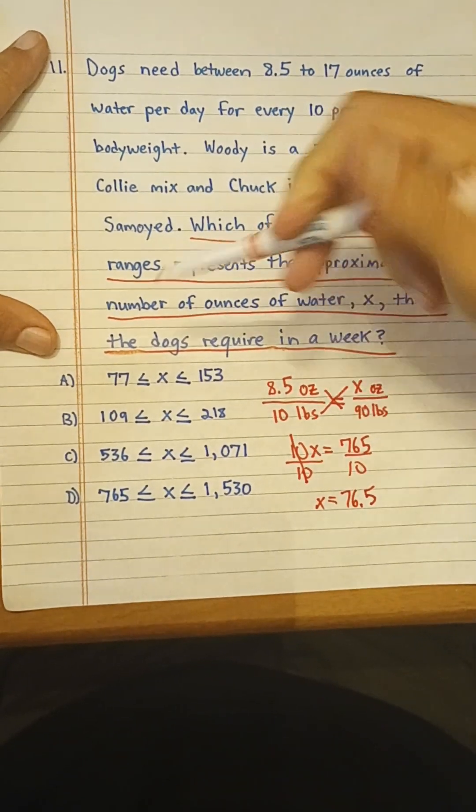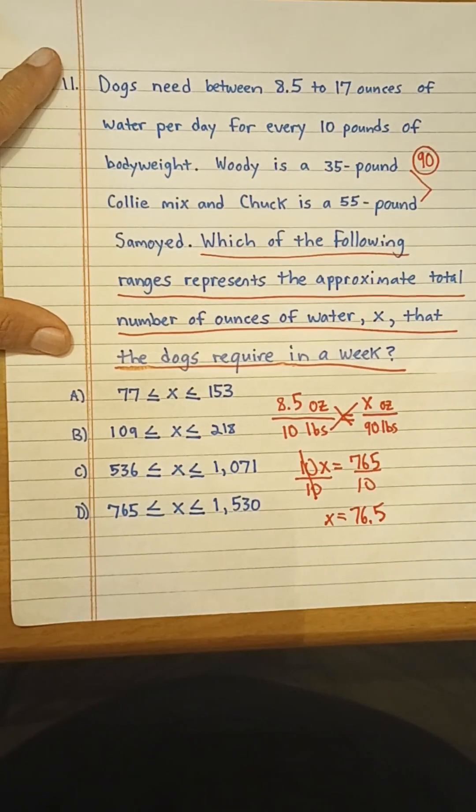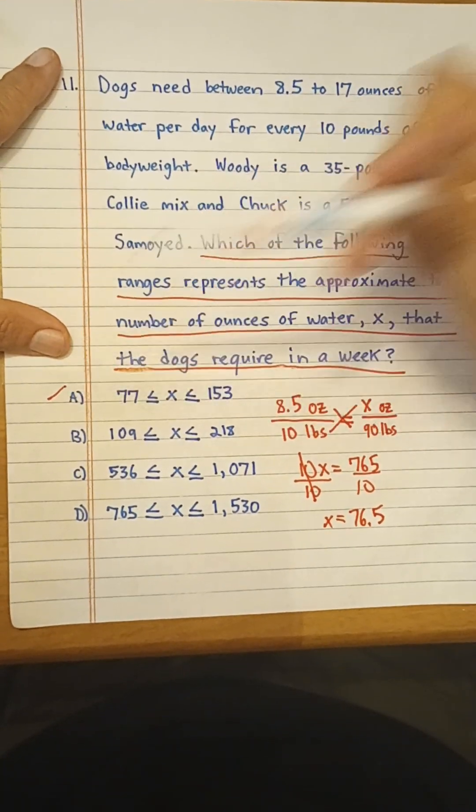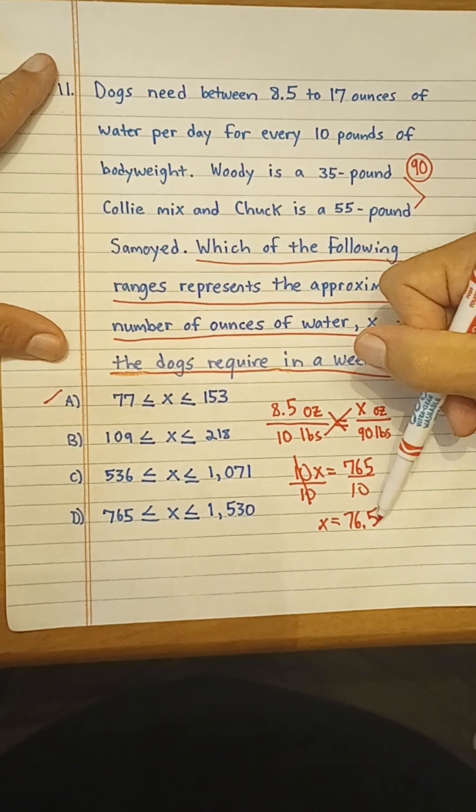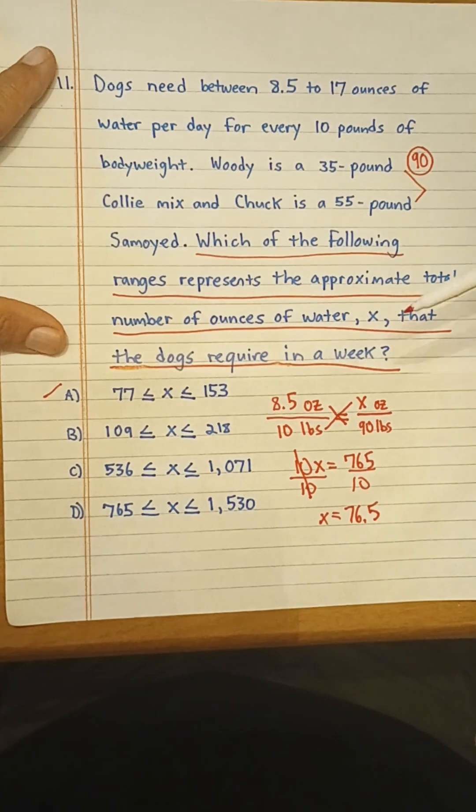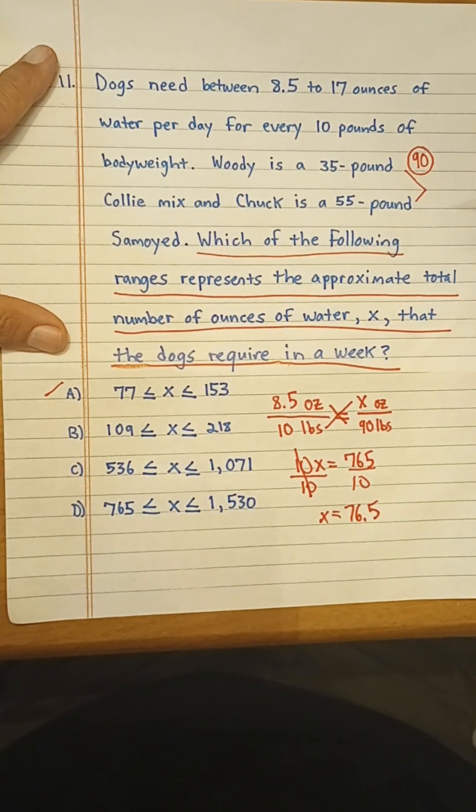Now we notice that 77 is there, but that's a trap, right? And the reason why that's a trap is because we've figured out just the daily intake, right, on the lower end, not the weekly intake.